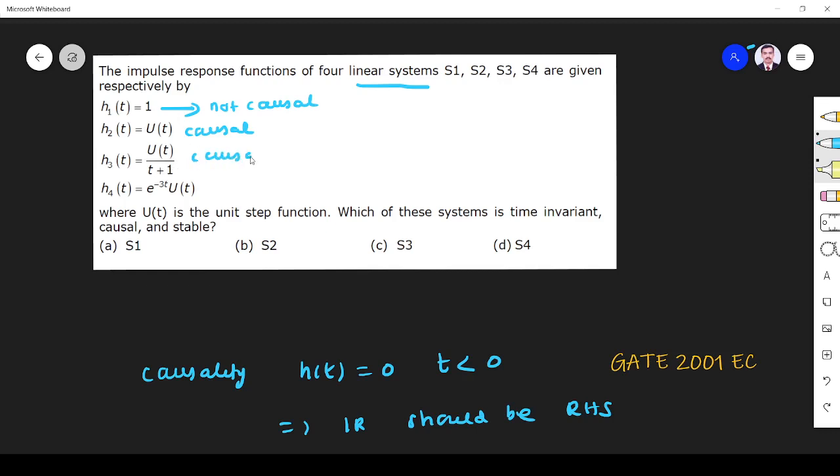What about this one? This is also causal, because e^(-3t)U(t) is given by a right-hand side signal only. So all the four are, three are causal, one is not causal. So this one is not coming into picture.